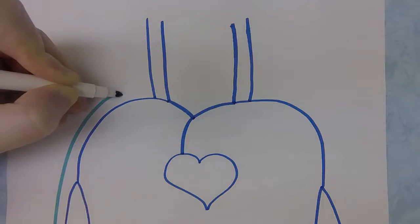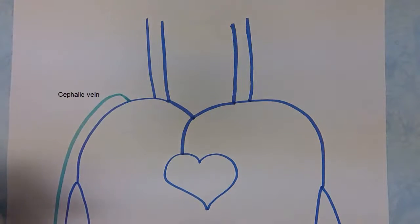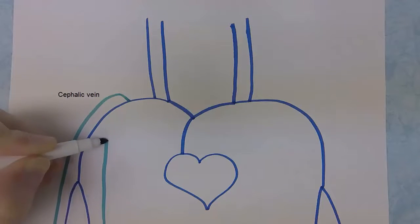So here we have one that is found on the lateral side of the upper limb joining in just as the axillary vein becomes the subclavian vein and that is called the cephalic vein.